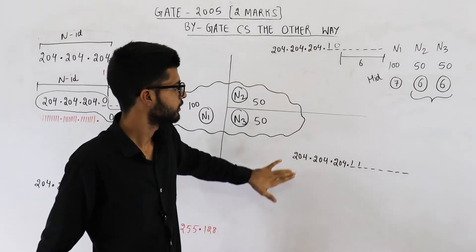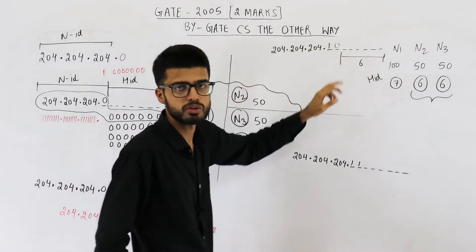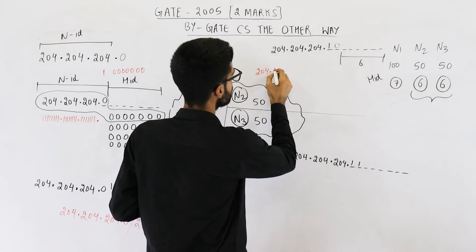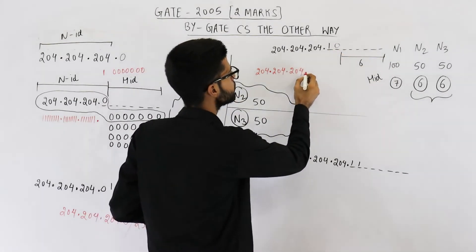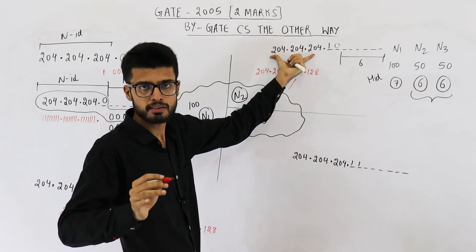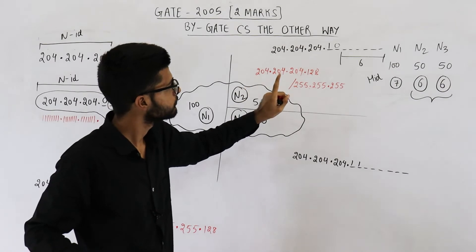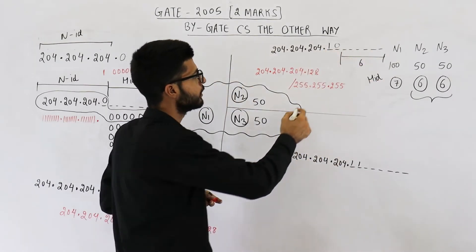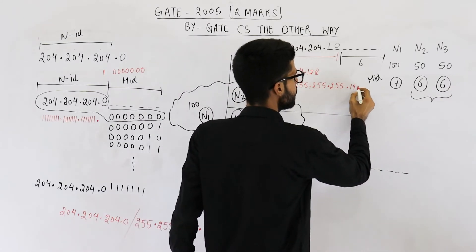For N2, the network ID is found by placing all zeros in the host ID part. The borrowed first bit is 1 and the second borrowed bit is 0, giving 10 followed by all zeros, which is 128. So the network ID for N2 is 204.204.204.128. The subnet mask has the first three octets as 255.255.255, and the last octet has the first two bits as network ID: 11 followed by zeros, which is 192. So the mask is 255.255.255.192.